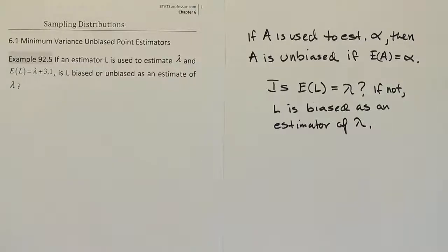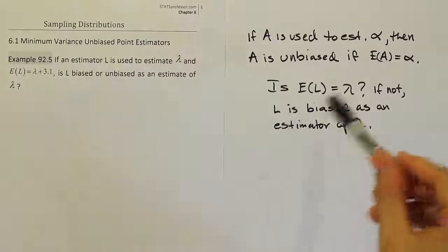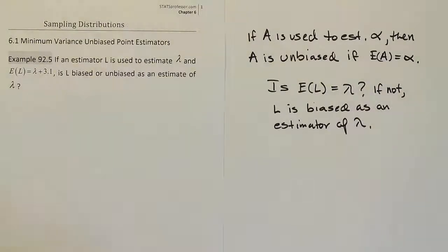However, it would be kind of a funny estimate. L minus 3.1 seems sort of strange. You might be able to do a better job than that. But either way, it would be an unbiased estimator because its expected value would be equal to the thing you're trying to estimate, which is namely lambda.